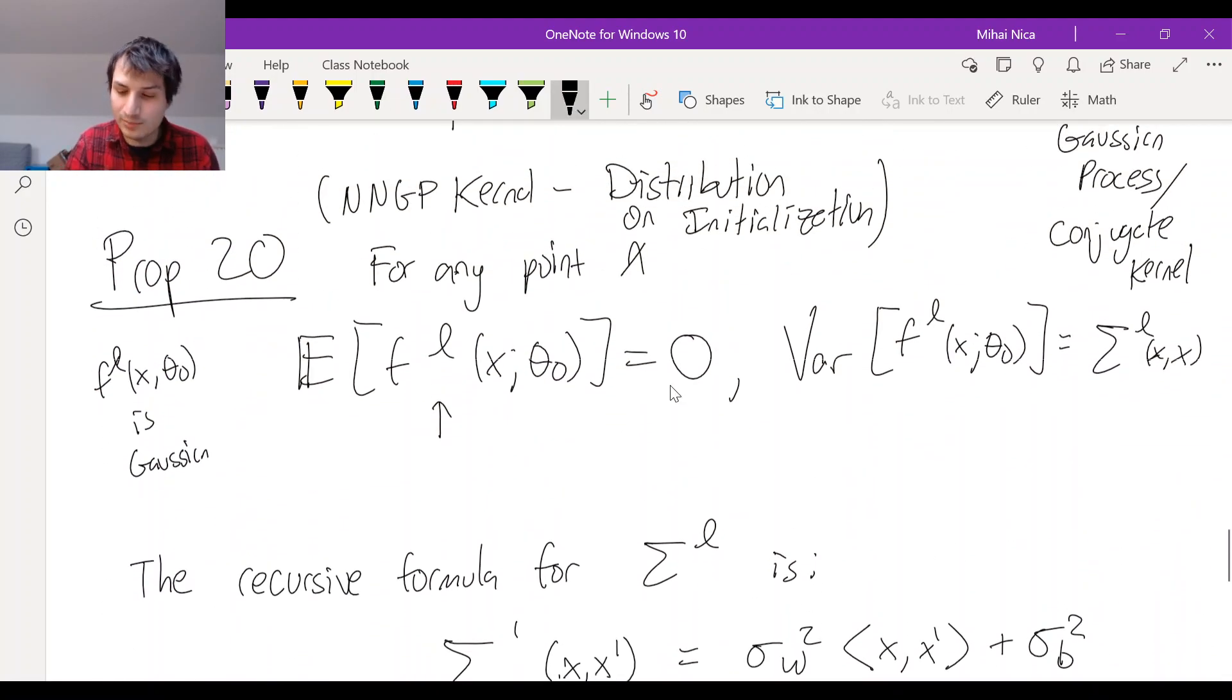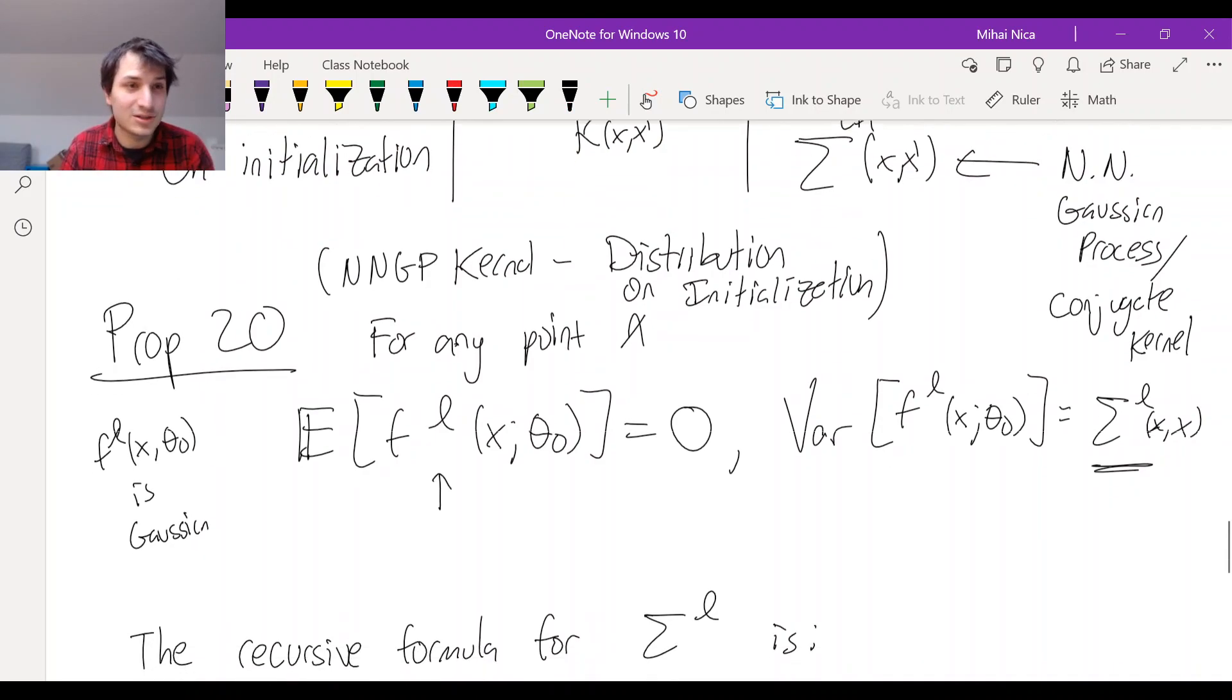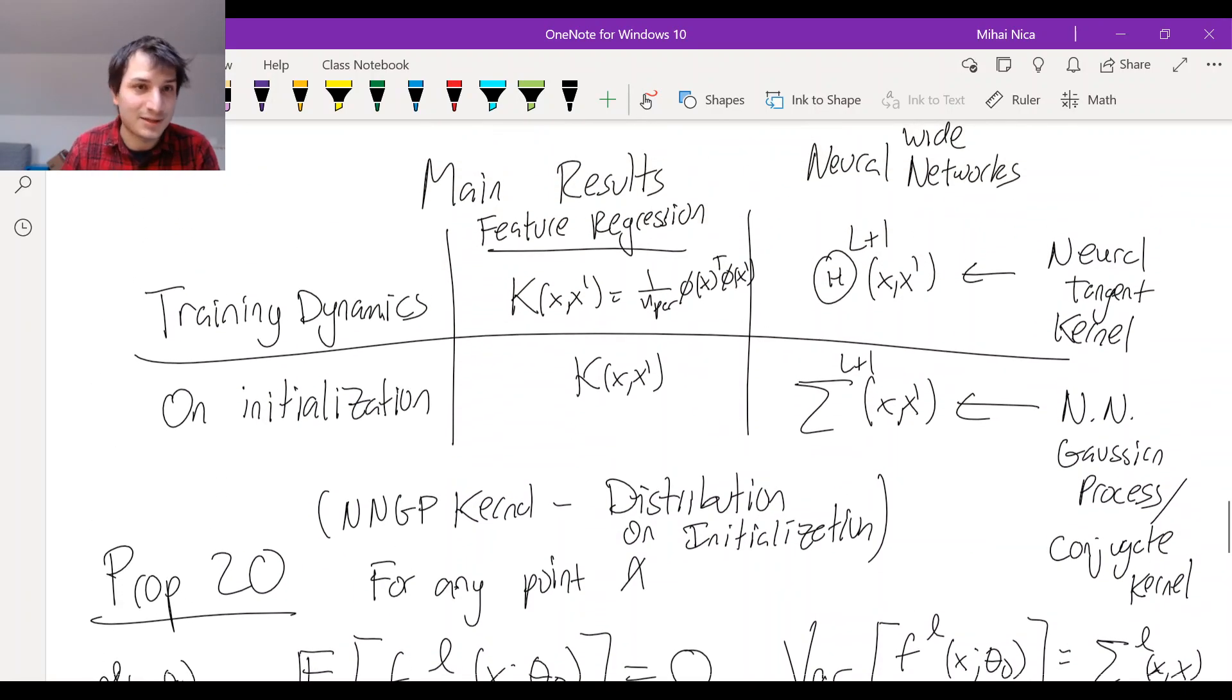And okay, here I've written it for one point. Of course, it's true for any arbitrary number of test points. So sometimes people call this property being a Gaussian process like we talked about before. So the output of the network on initialization is a Gaussian process. And its covariance is given by this Sigma L. Okay, that's the NNGP kernel. That's the NNGP kernel. And there's another kernel called the neural tangent kernel that is going to drive the training dynamics. And I will put that one in another video.